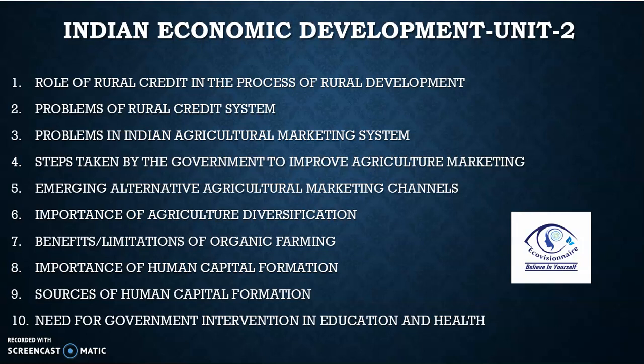We have 2 important topics in Rural Development. One is Rural Credit and the other one is Agriculture Marketing. This year they have again added Organic Farming, so we are expecting a question on Organic Farming also. The second topic is the Problem of Rural Credit System — what are the problems faced by the system? Then we have problems of the Agriculture Marketing System. Either we will get problems of Credit or problems of Agriculture Marketing.